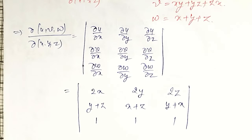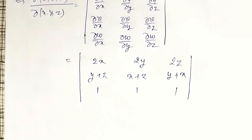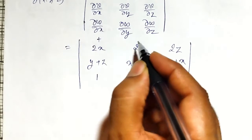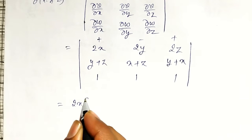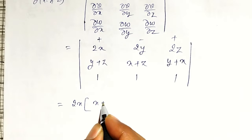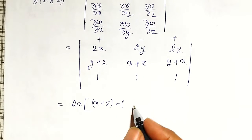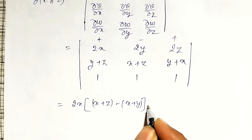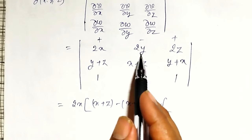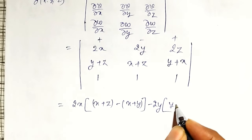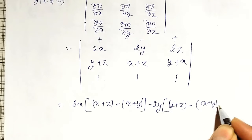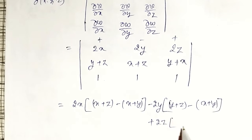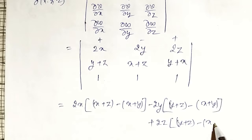Now I have to evaluate this determinant. Using the simple form of determinant expansion with plus, minus, plus: it is 2x times (x+z − (x+y)), minus 2y times (y+z − (x+y)), plus 2z times (y+z − (x+z)).